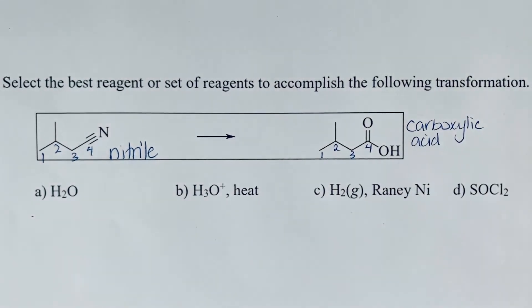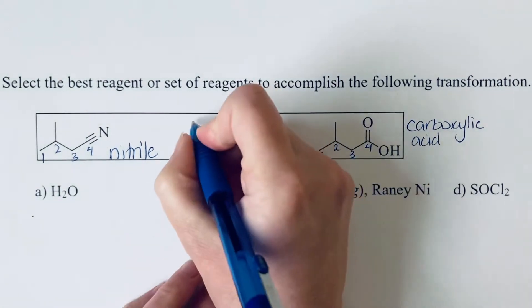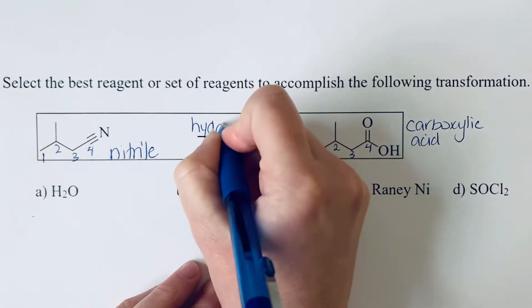Nitriles are carboxylic acid derivatives, and all carboxylic acid derivatives can be hydrolyzed to give carboxylic acid. So we need hydrolysis conditions here.